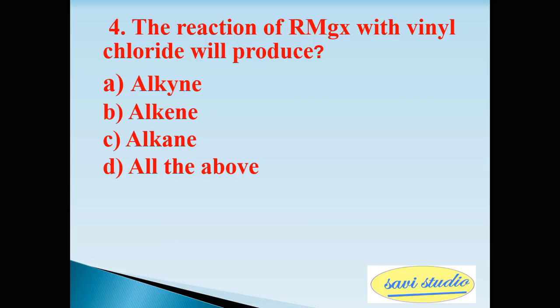Fourth question: the reaction of RMgX with vinyl chloride will produce, the four options are A: alkyne, B: alkene, C: alkane, D: all of the above. The right answer is B: alkene.